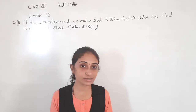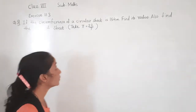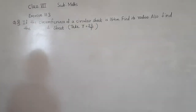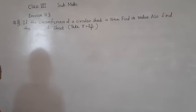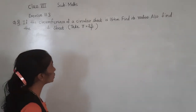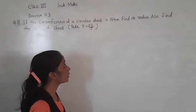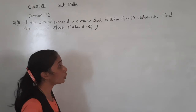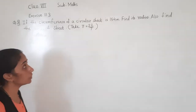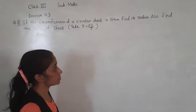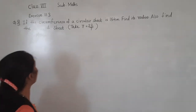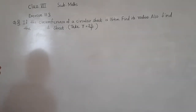Good morning students. Let's start today. Exercise 11.2, question number 3. If the circumference of a circular sheet is 154 metres, find its radius. Also find the area of the sheet.